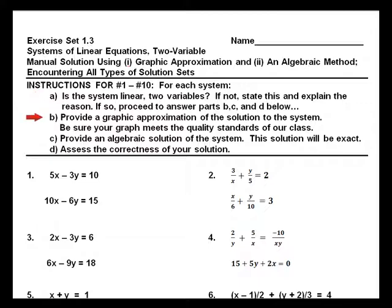Part B: Provide a graphic approximation of the solution to the system. Be sure your graph meets the quality standards of our class. Part C: Provide an algebraic solution of the system — this solution will be exact. Part D: Assess the correctness of your solution.